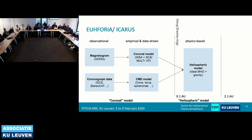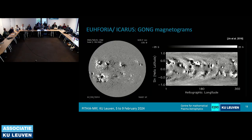Looking at how EUHFORIA and ICARUS work, we use a specific type of magnetogram. A magnetogram shows the surface of the sun and the magnetic field, and we can identify active regions, sunspots, etc. One important note: we only see the front side of the sun — we don't see the backside. So if you use the full magnetogram, the information about the backside is outdated.